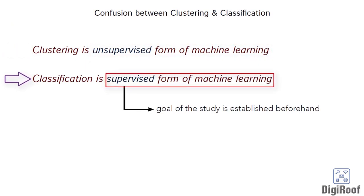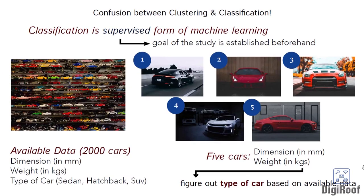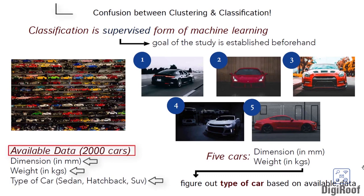Supervised learning involves those data analysis techniques where the goal of the study is established before we start working on the data. Imagine that we have data for 2000 cars, including their dimension, weight, and the type of car. Within the variable type of car, we have options like sedan, hatchback, SUVs, etc.